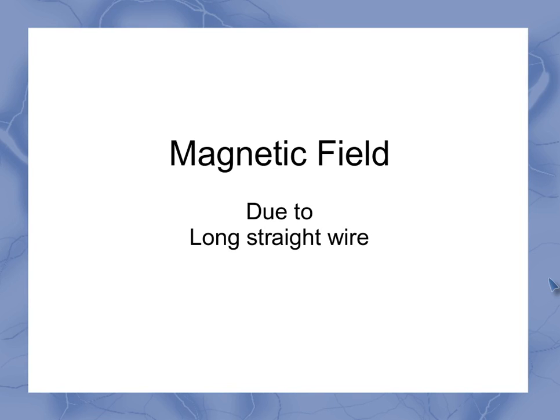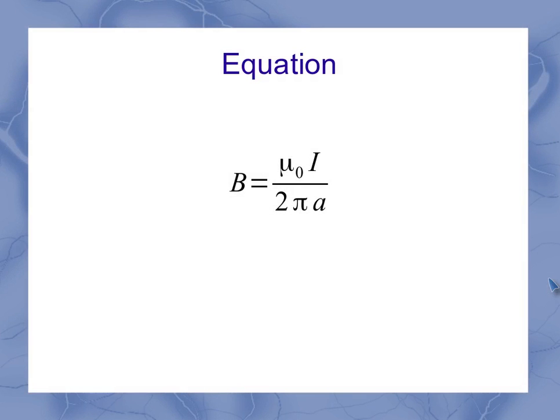Now we look at the magnetic field due to a long straight wire. Here's the equation we come up with from that, and this comes from an integration of the Biot-Savart law.